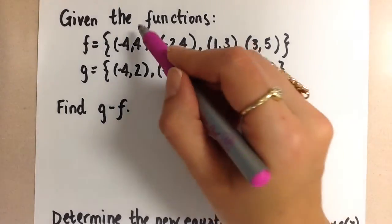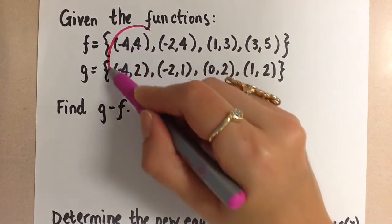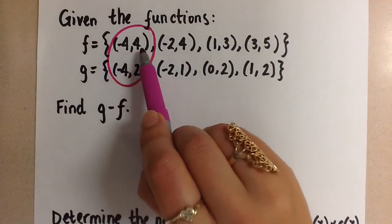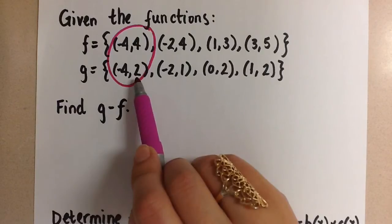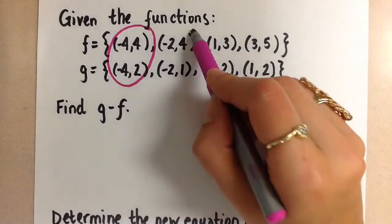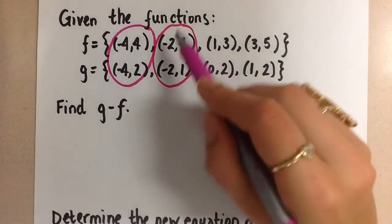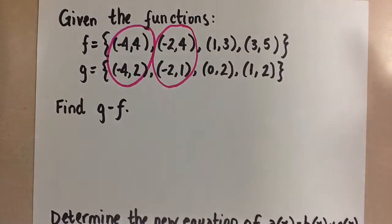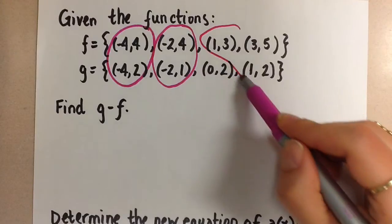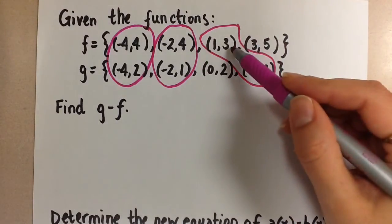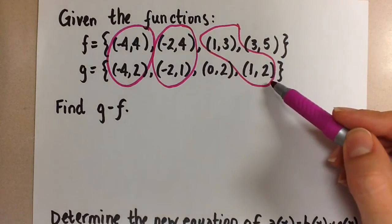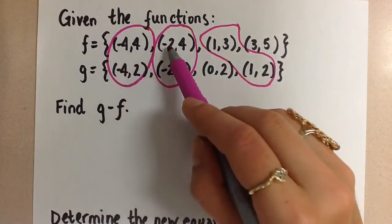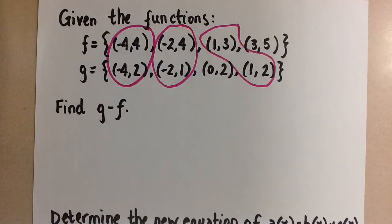So the two that would match, in this case, we can combine the negative fours here. So (-4,4) and (-4,2) can be put together. Then we can combine these points, (-2,4) and (-2,1). And then we can combine these two points, (1,3) and (1,2). We can only do that because they have matching x values for those points.